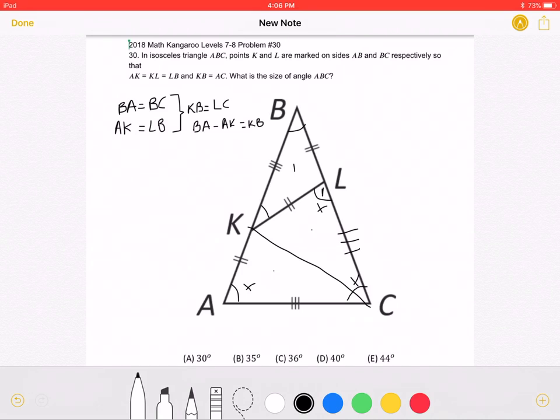Since this angle right here is an exterior angle, it is equal to the sum of this angle and this angle, meaning that this angle over here must be equal to X over 2, the same as this one.